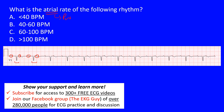Counting the P waves across the strip: we have four already, then continuing — five, six, seven, eight, nine, ten, eleven, twelve, thirteen, fourteen, fifteen, sixteen, seventeen, eighteen, nineteen, twenty, twenty-one, twenty-two, twenty-three, twenty-four, and there's one at the end — twenty-five. So we have a total of 25 P waves.